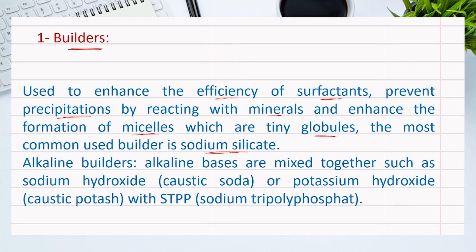Another type of builder is the alkaline builder, which is combined with surfactants to neutralize acids and make the detergent suitable for stain removal. Many types of alkaline bases are mixed together, such as sodium hydroxide (caustic soda) or potassium hydroxide (caustic potash), along with STPP — sodium tripolyphosphate.